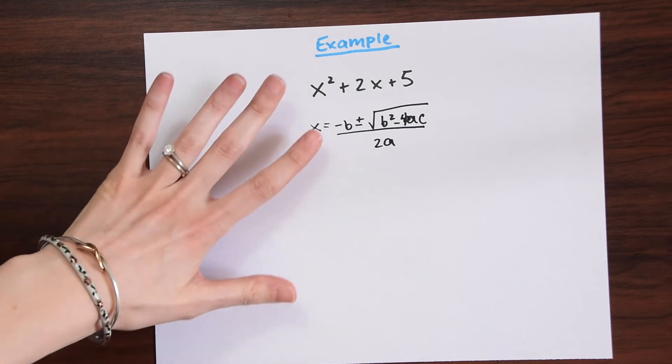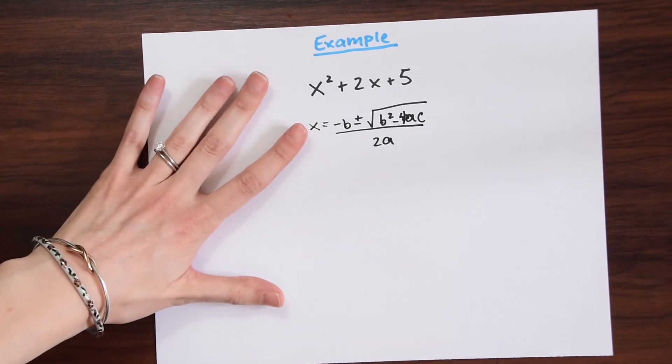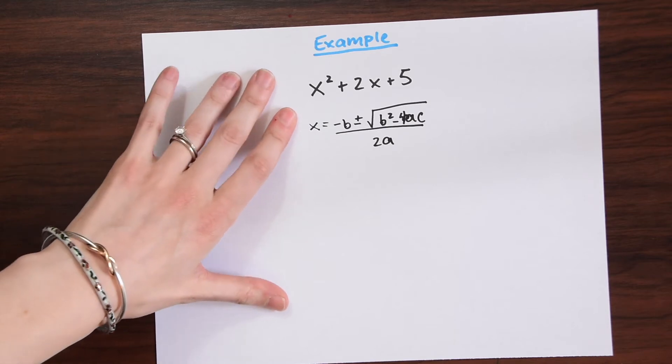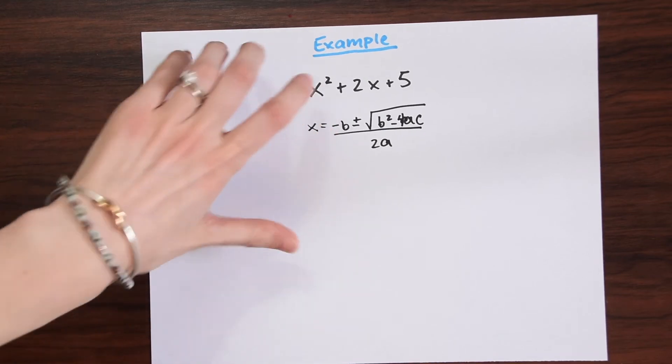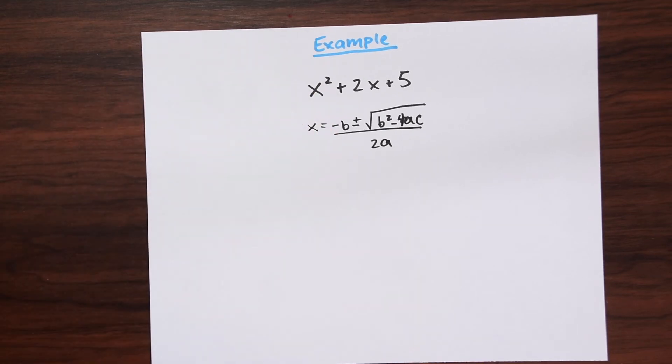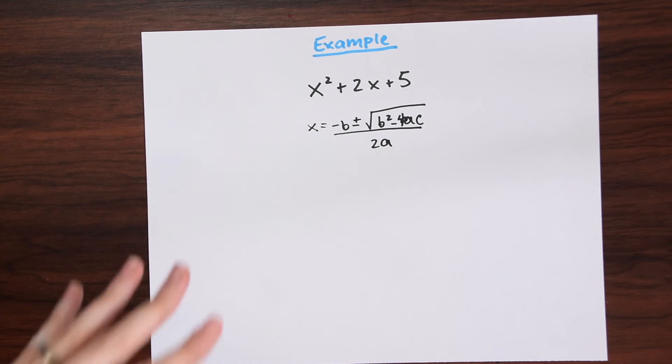We have x equals negative b plus or minus the square root of b squared minus 4ac all over 2a. There's different ways to memorize this. Back in the day my teacher made me sing Pop Goes the Weasel, the formula to Pop Goes the Weasel. Maybe that can work for you. I'm not going to sing it here. Let's continue with this question.